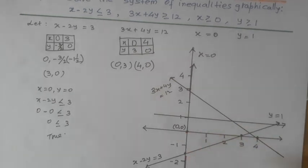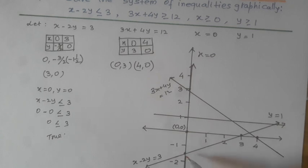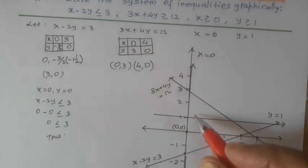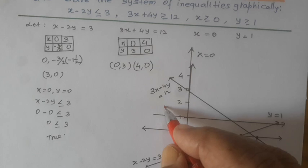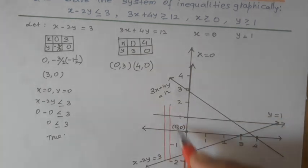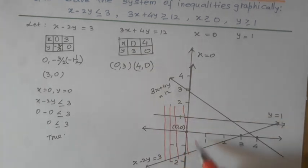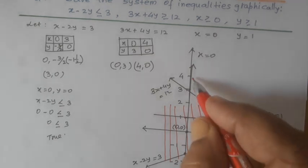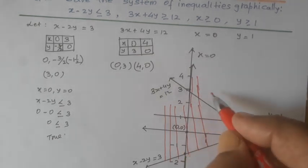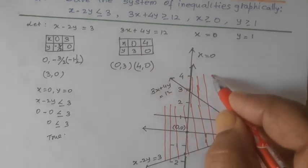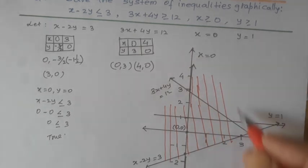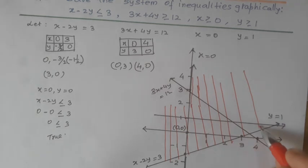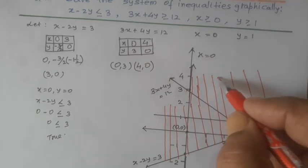When it is true, the answer lies towards the origin. The origin lies in the answer. So, our shading will be in this direction. We are using different colors of pen to find the distinct answer of the common area.